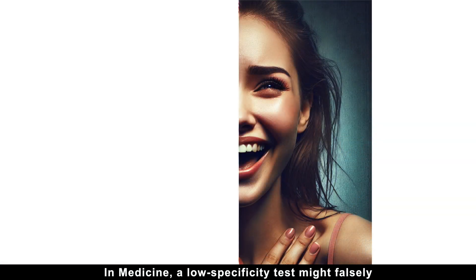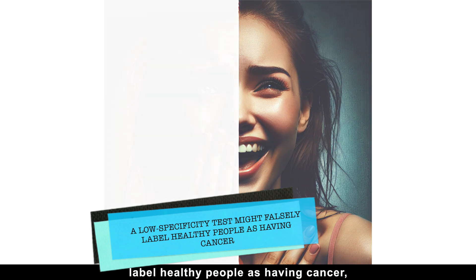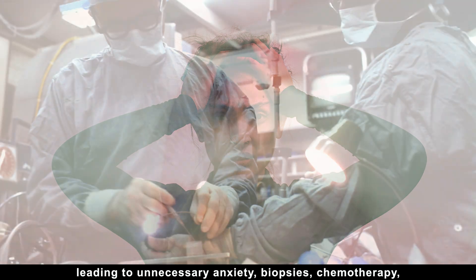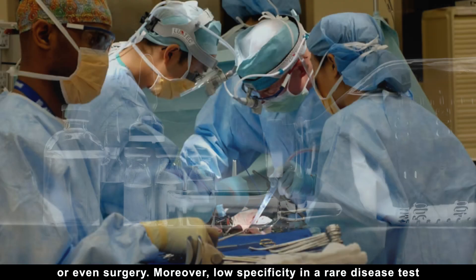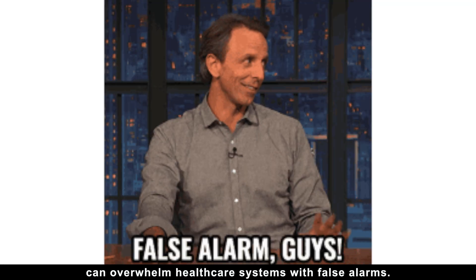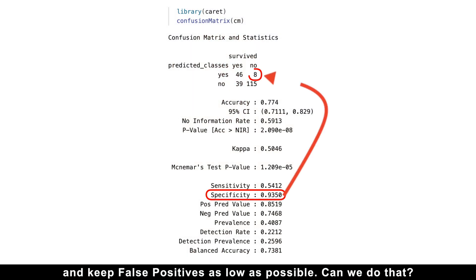For example, in medicine, a low specificity test might falsely label healthy people as having cancer, leading to unnecessary anxiety, biopsies, chemotherapy, or even surgery. Moreover, low specificity in a rare disease test can overwhelm healthcare systems with false alarms. So, sometimes we need to maximize specificity and keep false positives as low as possible.